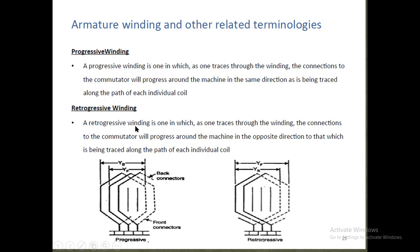A retrogressive winding is one in which, as one traces through the winding, the connections to the commutator progress around the machine in the opposite direction to that being traced along the path of each individual coil. These concepts are related to the technical aspect of winding connections — single layer, two layer, multi-layer — and describe how progressive and retrogressive winding connections are made.